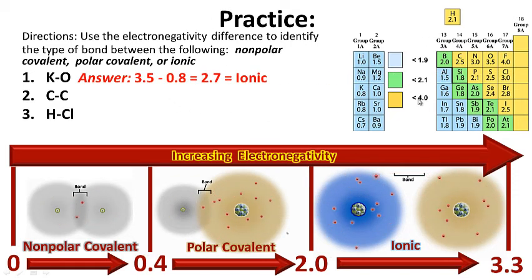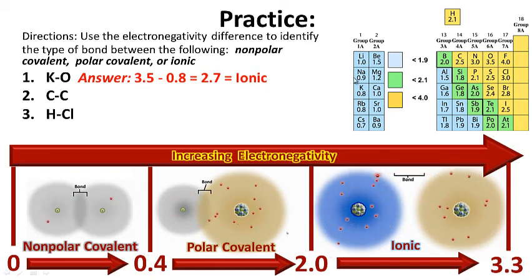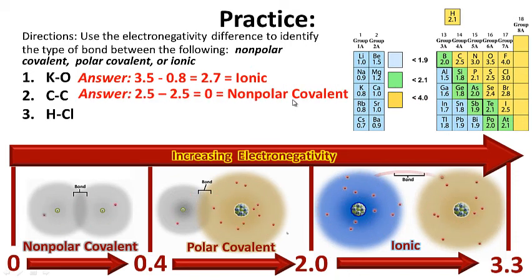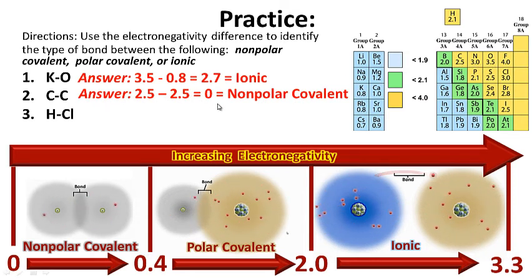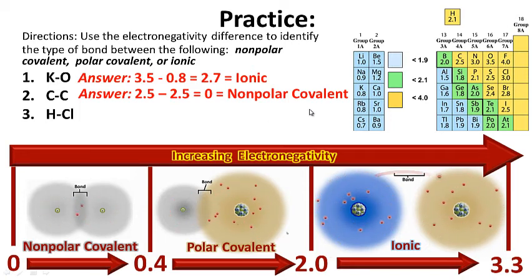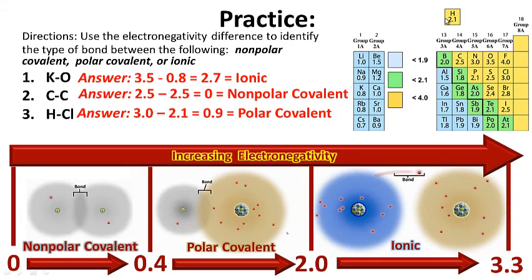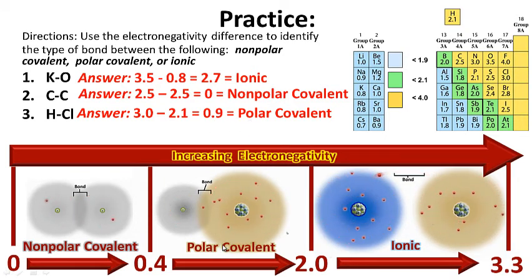Let's see how you did. K and O: subtract — oxygen is 3.5, potassium is 0.8, giving a difference of 2.7 — that's an ionic bond. Carbon to carbon: 2.5 minus 2.5 equals 0, giving us a completely non-polar covalent bond. And finally, hydrogen and chlorine: 3.0 minus 2.1 gives us 0.9, which is a polar covalent bond. Hopefully you got those right.